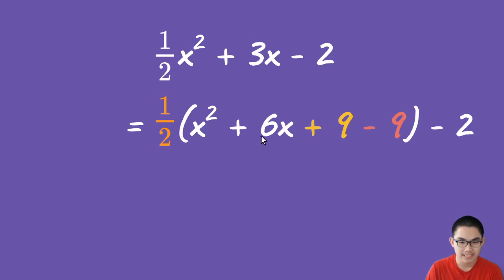It turns out that x² + 6x + 9 is the same thing as (x + 3)². You can replace this with this expression here.